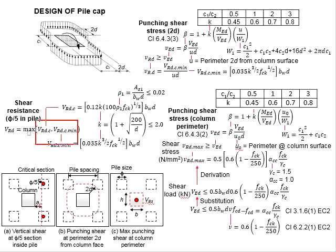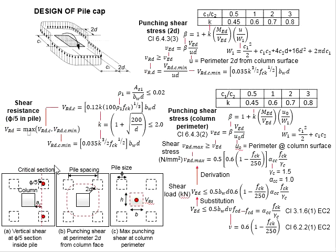The larger value of the two will be the shear resistance of the pile cap, and this is to be checked against the VEd, which is the vertical shear load of the pile caps. The resistance needs to be greater than the shear force of the pile cap so that the pile cap does not fail in shear.